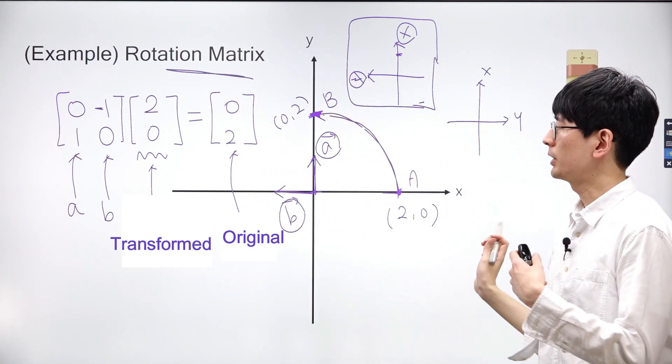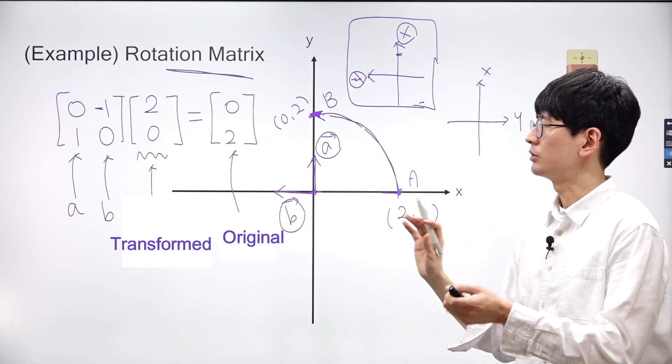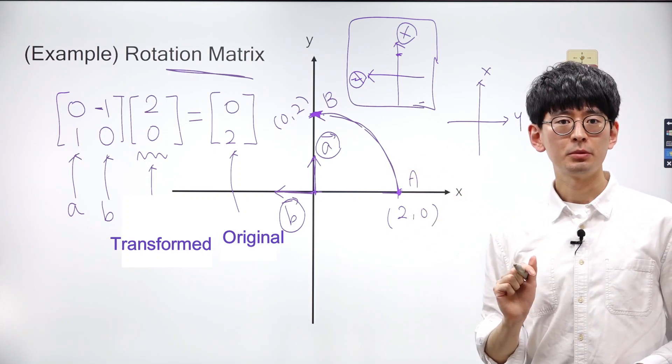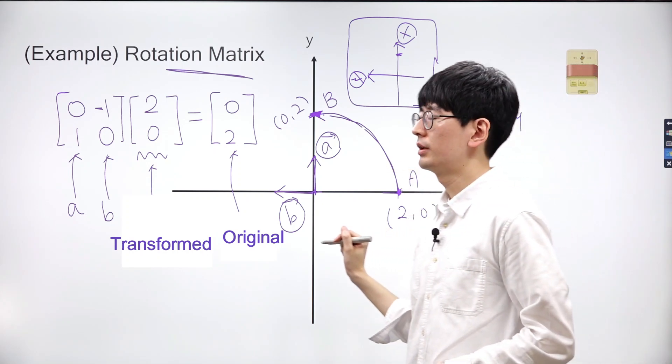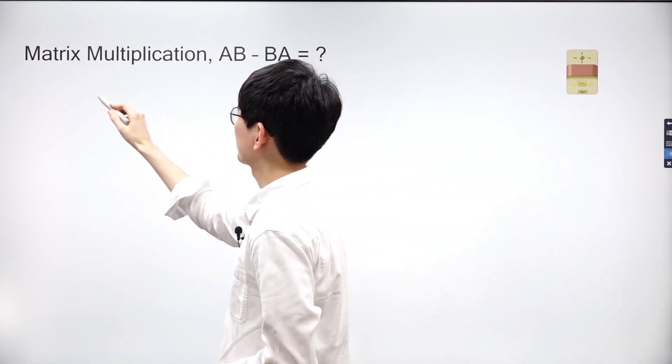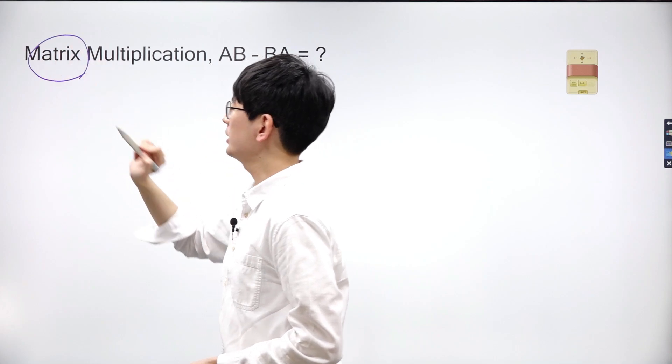A rotation matrix is a good example that directly demonstrates how the coordinate space undergoes a transformation. From now on, we are going to explore the multiplication between two matrices instead of a matrix and a vector.